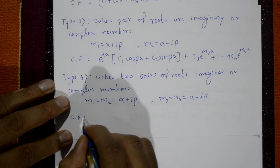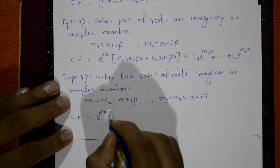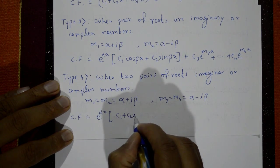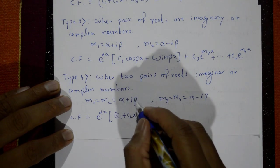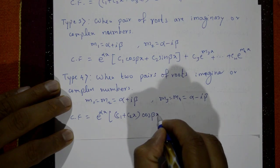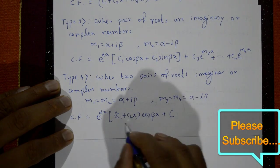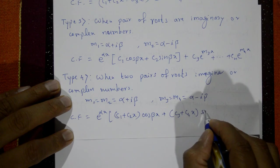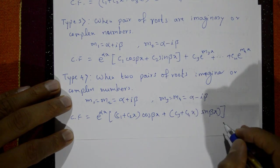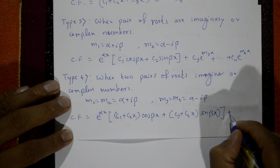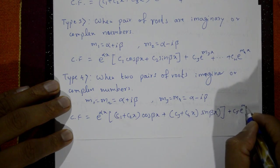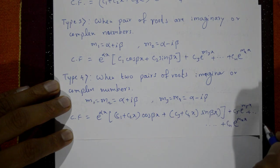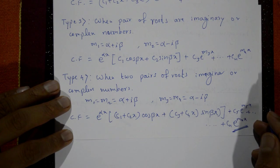The complementary function is e^(αx)·[(c1 + c2·x)·cos(βx) + (c3 + c4·x)·sin(βx)] + c5·e^(m5·x) + ... + cn·e^(mn·x). These are the four types of the complementary function.